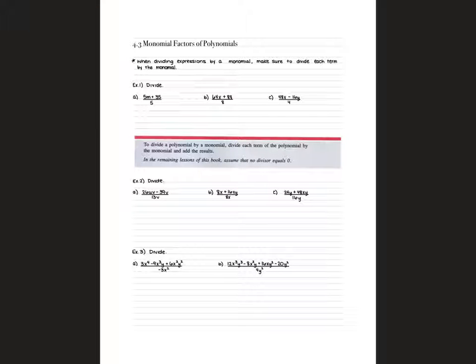4-3: Monomial factors of polynomials. When we're dividing these expressions by a monomial, we need to make sure that we divide each term by that monomial.